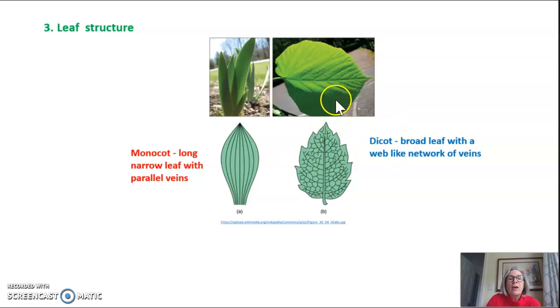If you look at a dicot leaf first of all it's very broad it's much wider than a monocot leaf and if you look at the veins they have more of a web-like pattern. Now this is where some students get a bit confused because if you look closely at these vein patterns in this dicot leaf you would say well this vein is parallel to this one so it has parallel veins and yes that's true but it also has many other veins coming off of these parallel veins giving it more of a web-like pattern. In a monocot you only see parallel veins. You don't see any web-like pattern at all.